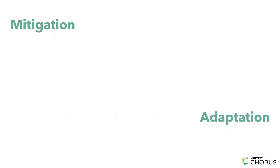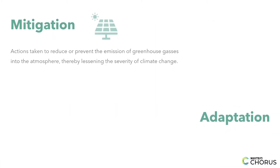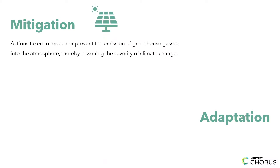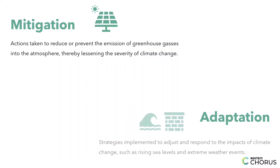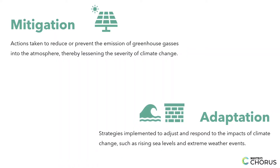Let's look at some important words we'll be using through this lesson. Mitigation means the actions taken to reduce or prevent the emission of greenhouse gases into the atmosphere, thereby lessening the severity of climate change. Adaptation means the strategies implemented to adjust and respond to the impacts of climate change, such as rising sea levels and extreme weather events.